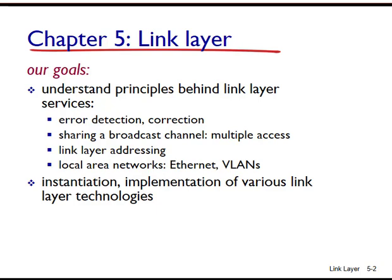Then we learned that the network layer provides a communication service between any two network hosts. Between the two hosts, datagrams travel over a series of communication links, some wired and some wireless, starting at the host, passing through a series of packet switches — that's link layer switches and routers — and ending at the destination host. As we continue down the protocol stack from the network layer to the link layer, we will find how packets are sent across the individual links that make up the end-to-end communication path. We will find answers to several other questions in this module, such as how error detection and correction, multiple access, link layer addressing, and more is handled, as you can see from this slide.